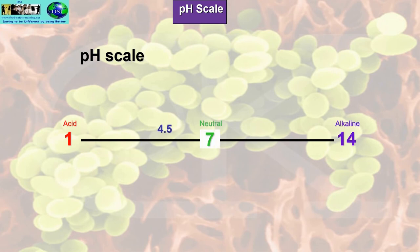The pH scale goes from 1 to 14: 1 is acid, 7 is neutral, and 14 is alkaline. Bacteria prefer neutral conditions, although E. coli has been known to grow in acidic conditions around pH 4.5. Low acid food is classed as pH 4.5, while acid would be 1. Cleaning materials tend to have alkalinity around 12 to 14.